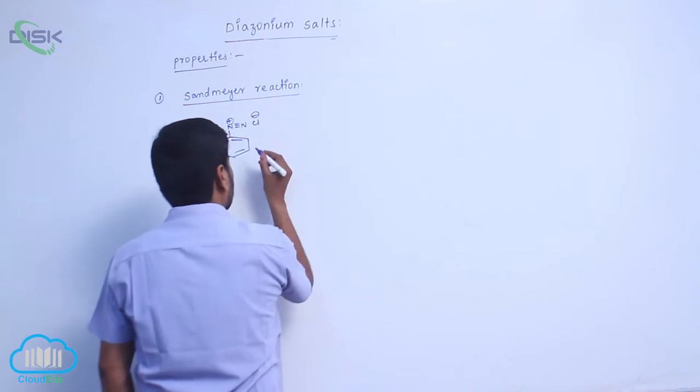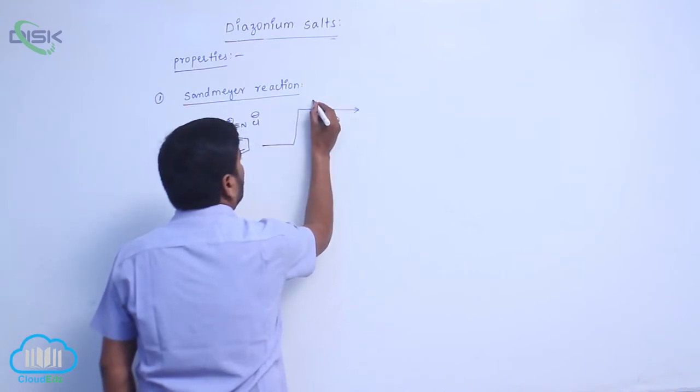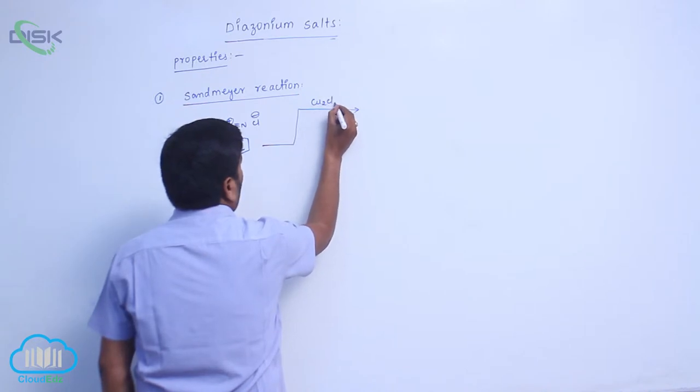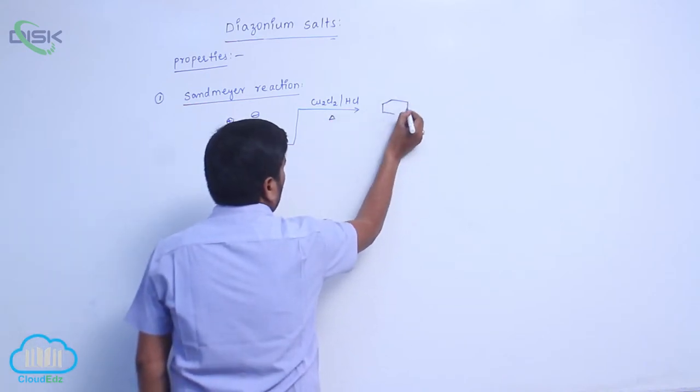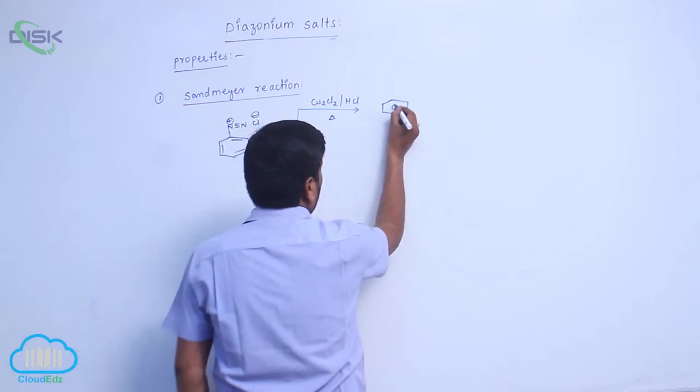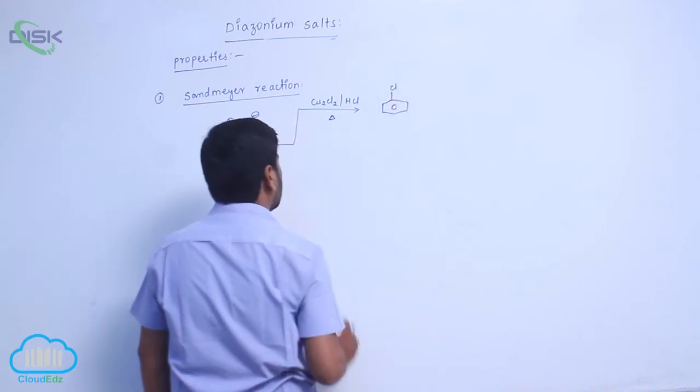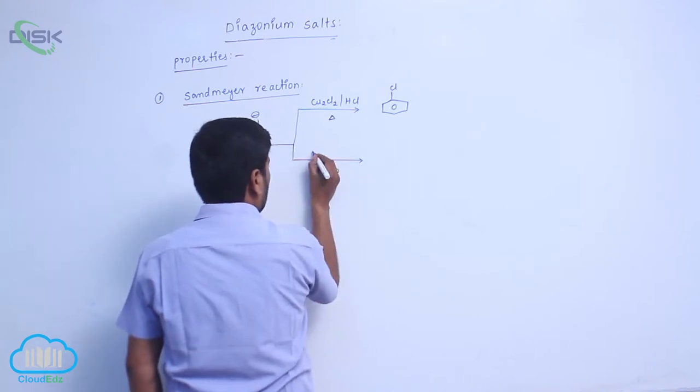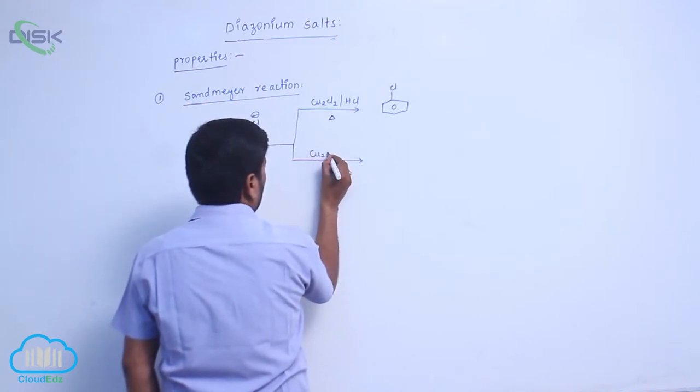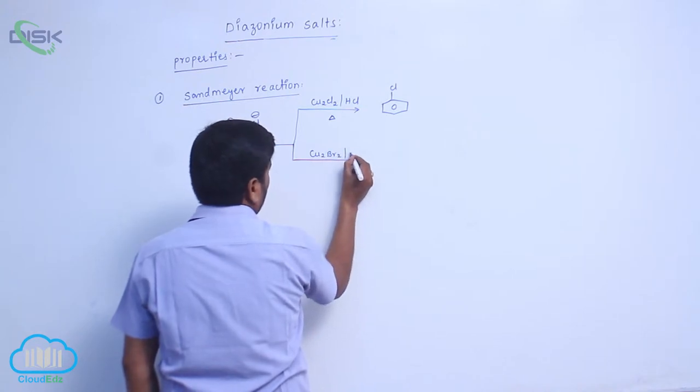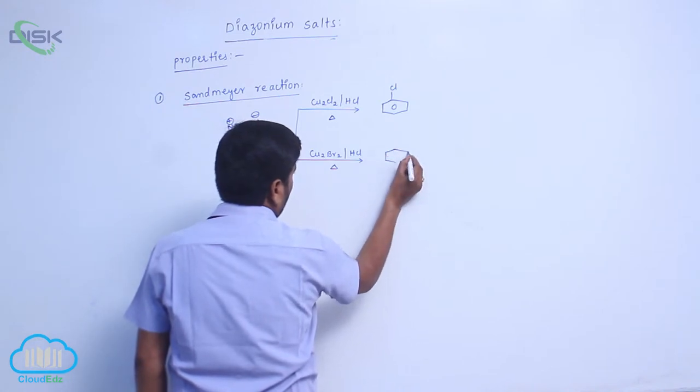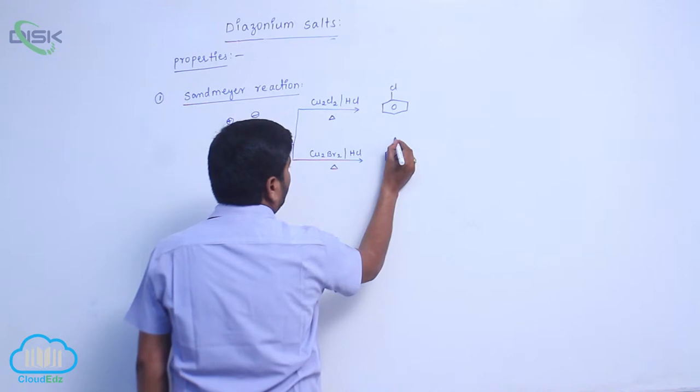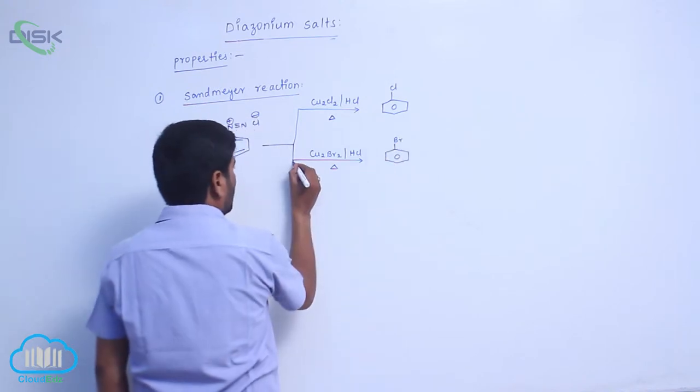This benzene diazonium chloride reacts with cuprous chloride in presence of hydrochloric acid to form chlorobenzene. Second one is cuprous bromide in presence of hydrochloric acid to form bromobenzene.